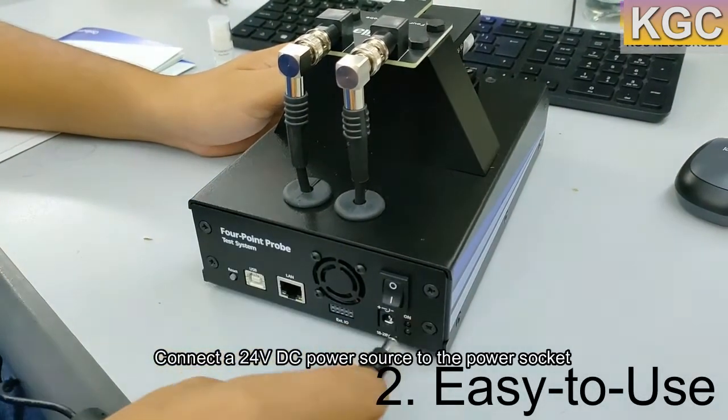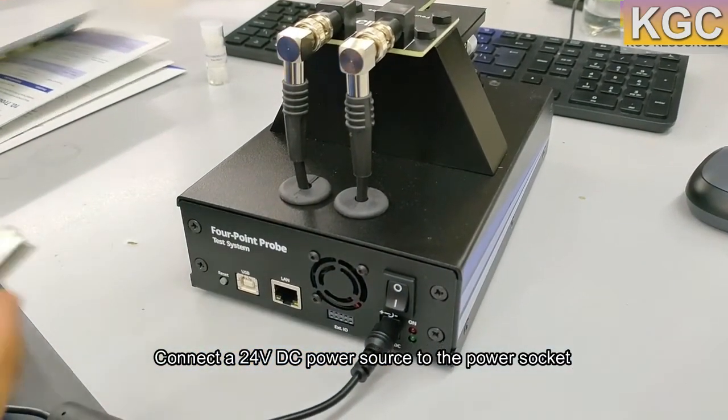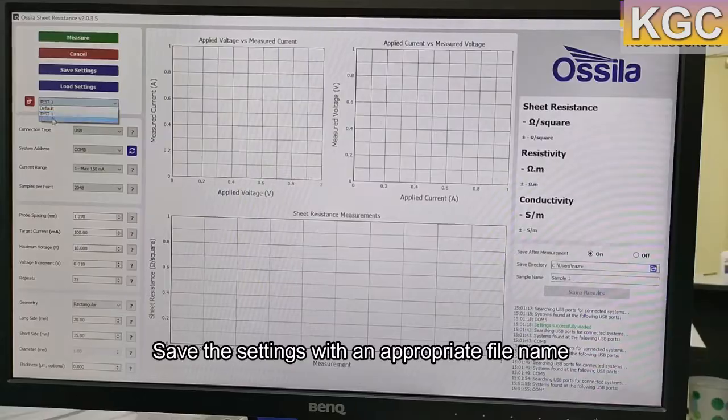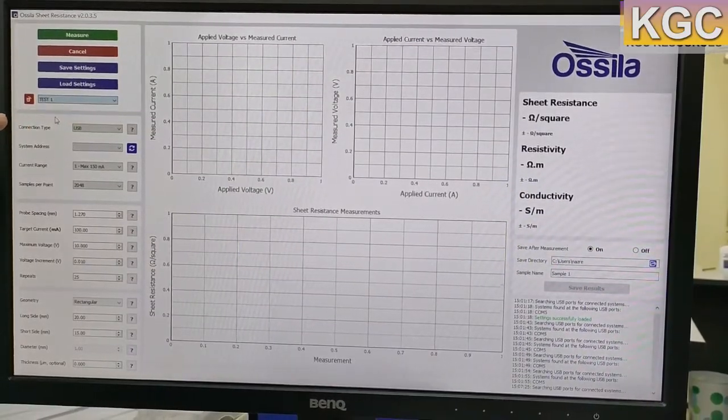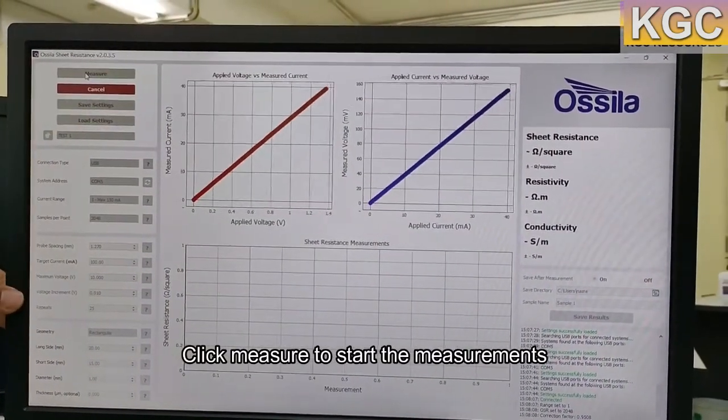2. Easy to use. Just plug in the system, install the software, and you're ready to go. The intuitive interface and clean design makes the 4-point probe easy to use, simplifying the measurement of sheet resistance. Substrates of various shapes and sizes can be used.